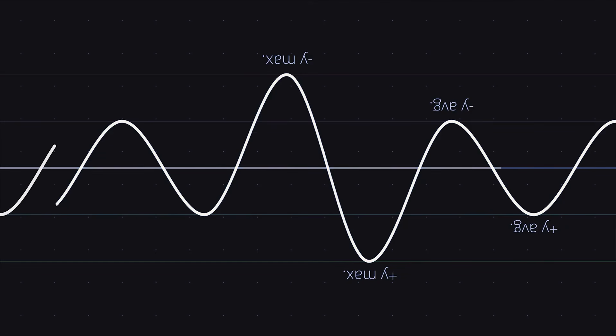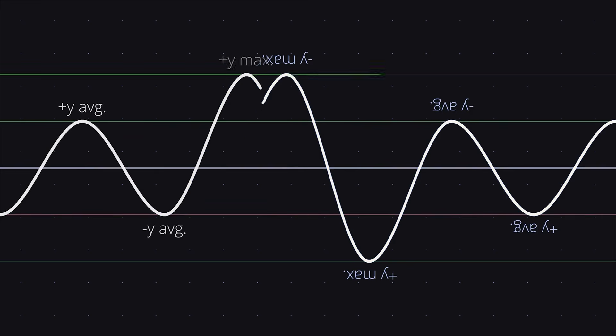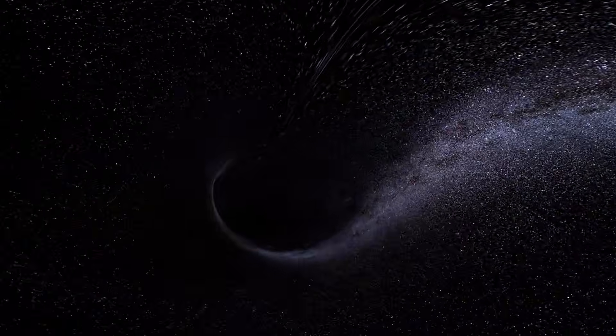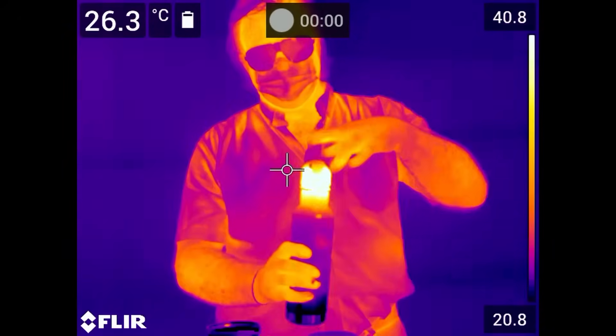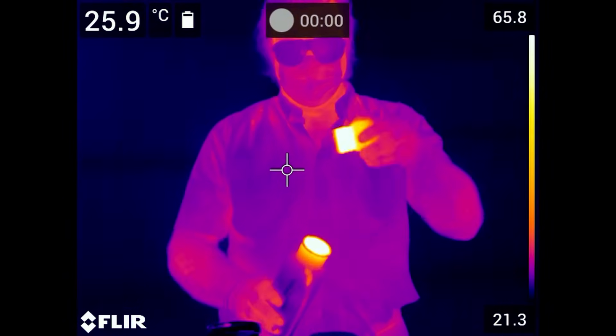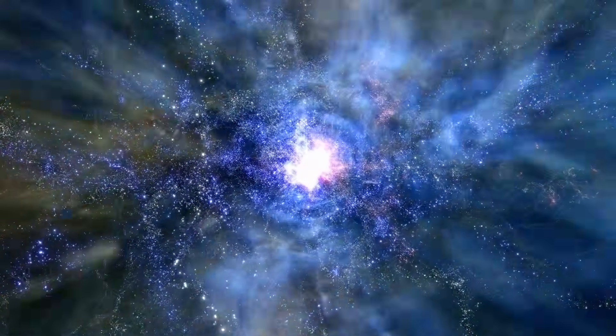Light moves as waves. And as the universe expands, those waves are pulled longer and longer. Over enormous distances, visible light is stretched into infrared. Infrared becomes microwave radiation. Eventually, light becomes so stretched that human eyes can no longer detect it.